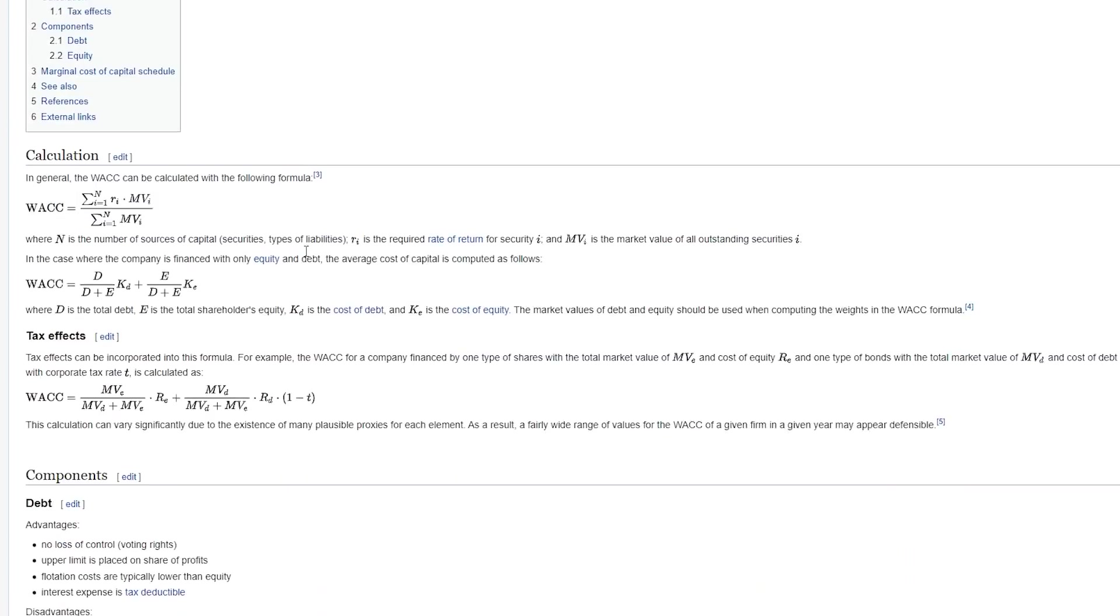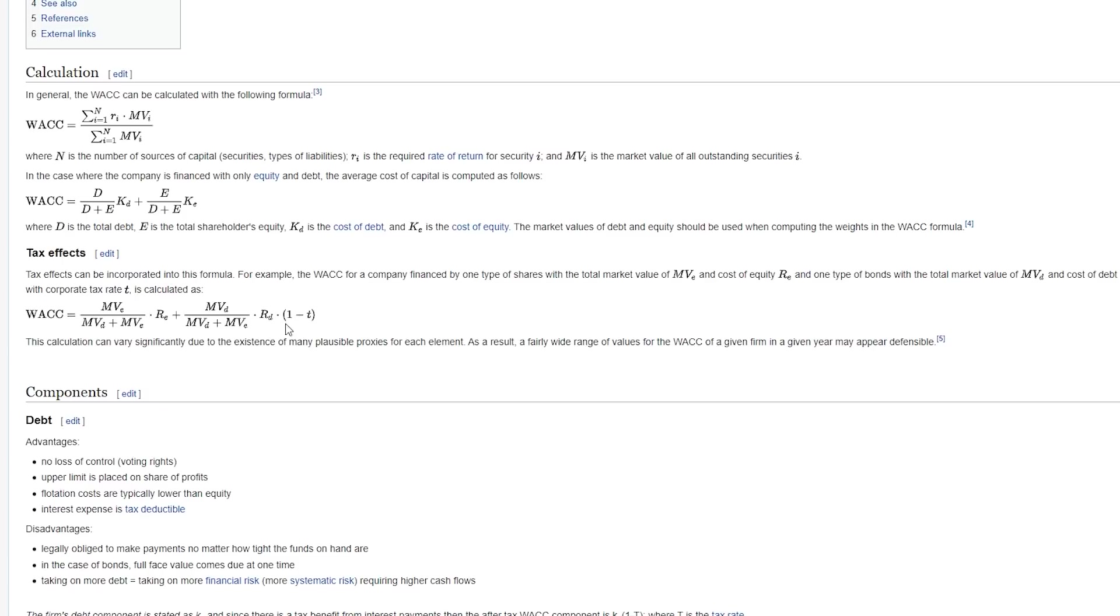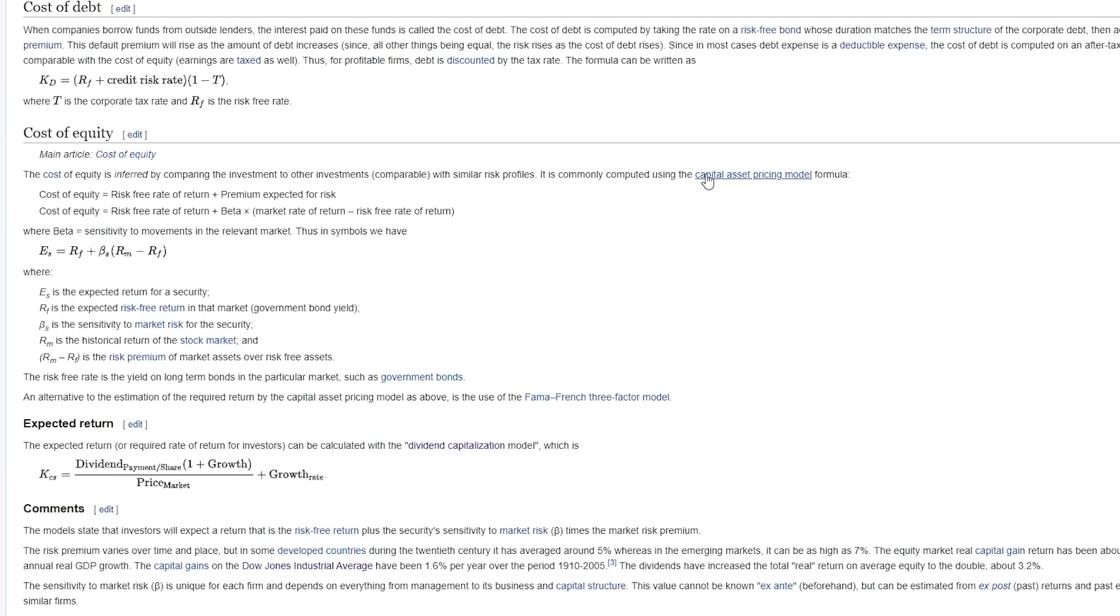So why do Buffett and Munger disagree with using weighted average cost of capital as a discount rate? Well, it takes in variables they view as irrelevant to valuing a business. For example, the capital asset pricing model formula uses the volatility of stock price and historical return of the stock market in its calculation. Buffett explains why this is a mistake here.